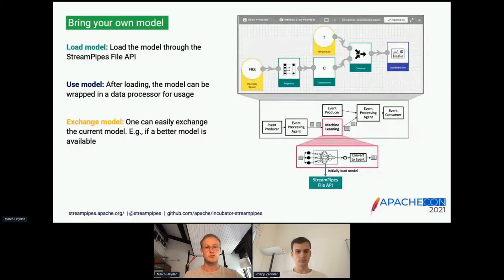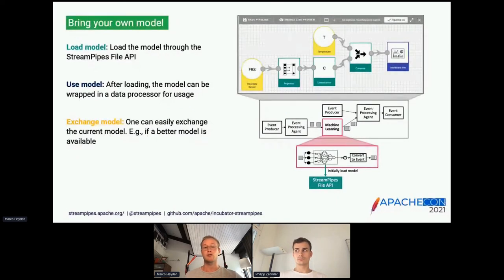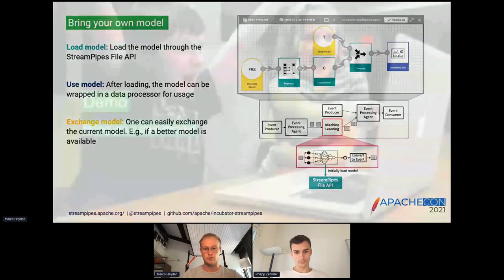Next, we want to show you how you can use a machine learning model that you've trained offline in StreamPipes. You would use the StreamPipes file API with which you can upload your model. Afterwards, you can wrap it inside a data processor and then the model is available in your pipeline editor. This allows you to exchange your model quite easily — if you find a better model, you can simply re-upload it and then use it in the pipeline editor as well. With that, I'll hand over to Philip, who will show you the demo.